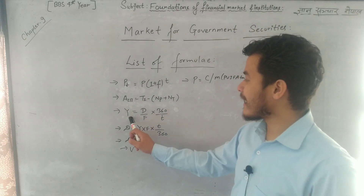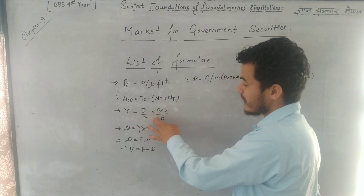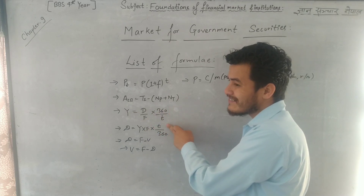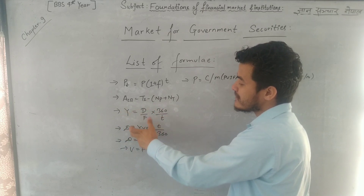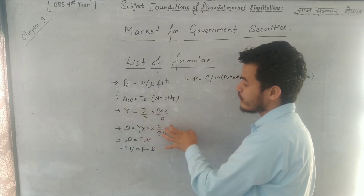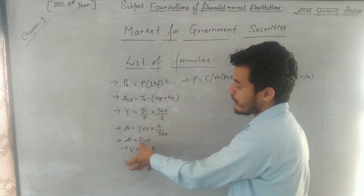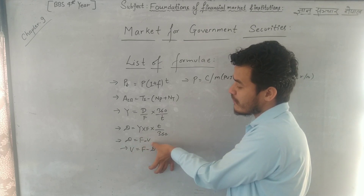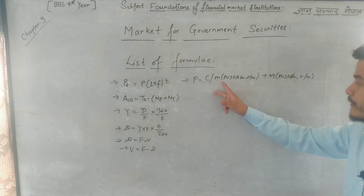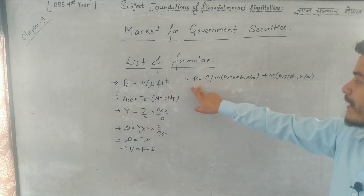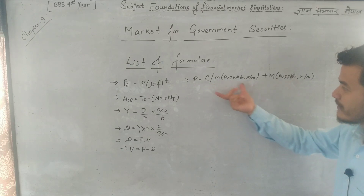The yield on present securities on a discount basis is: discount upon face value, times 360 upon the time period. The discount amount is face value minus selling price. The coupon amount and number of payments give the coupon rate, and the lending formula provides the price at a discount request.